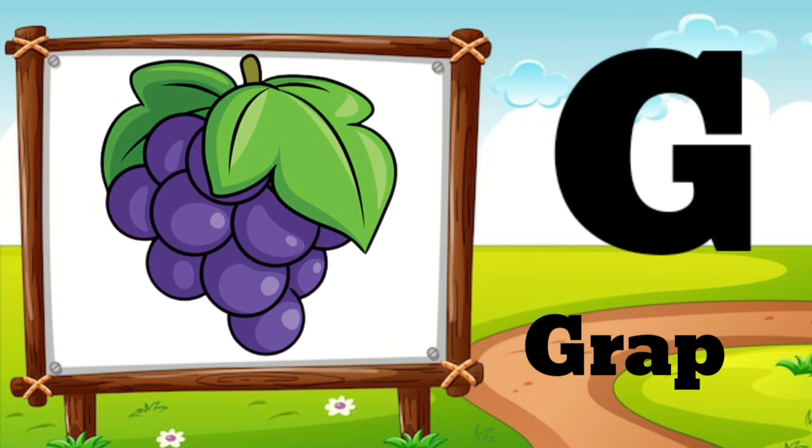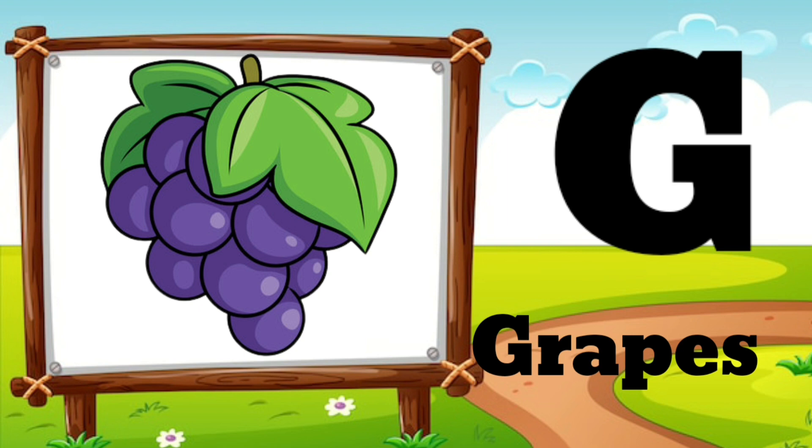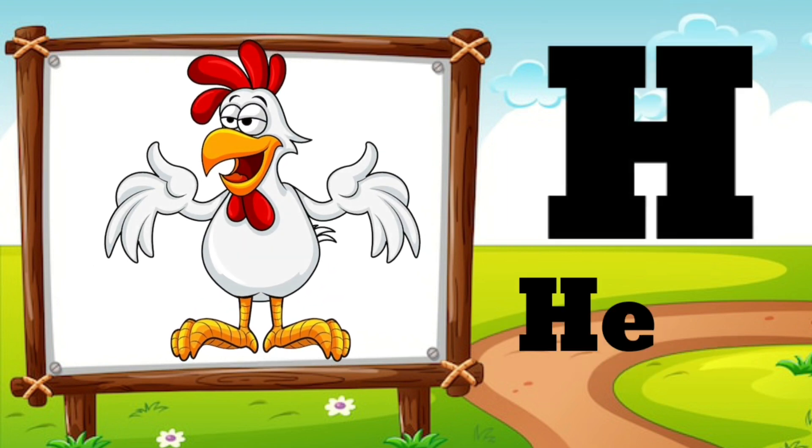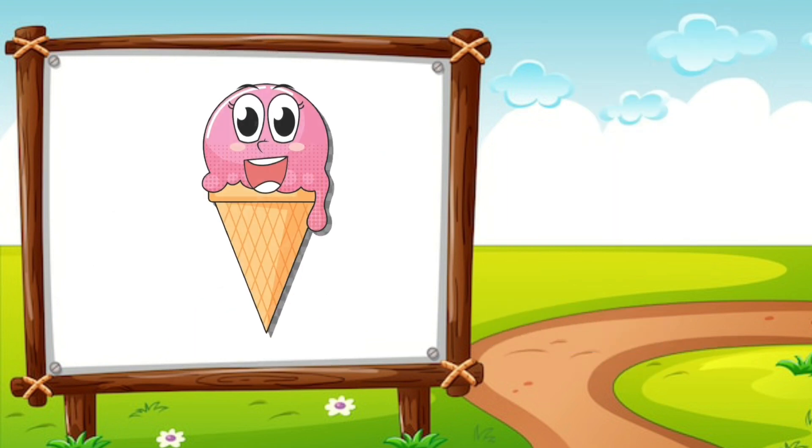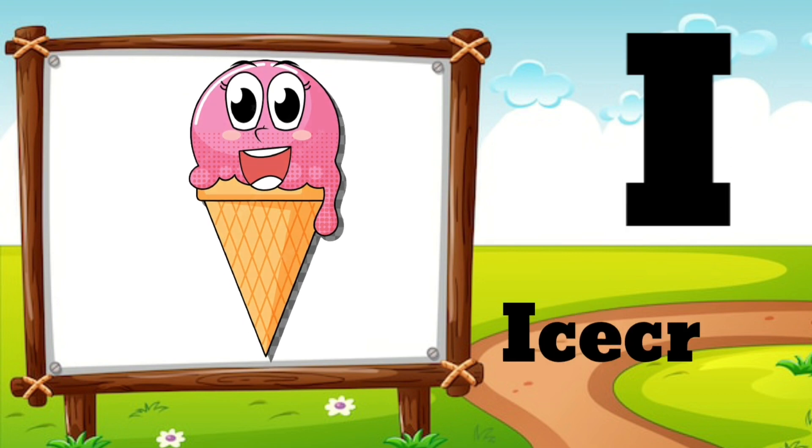G is for Grapes. H is for Hen. I is for Ice Cream.